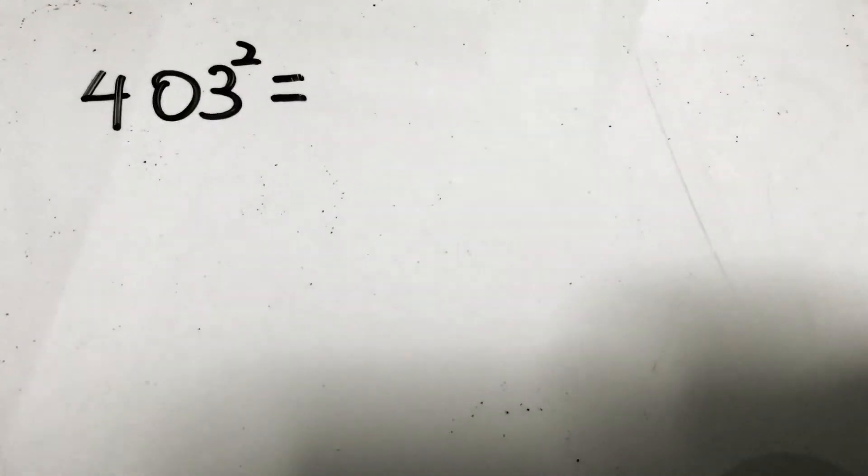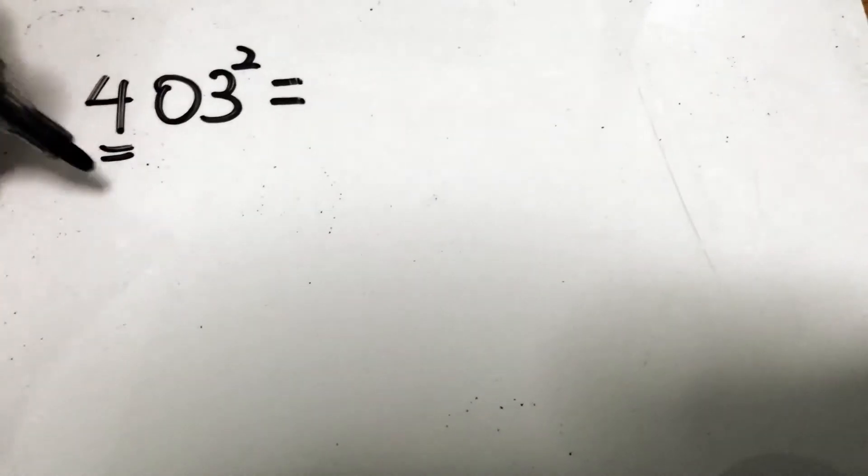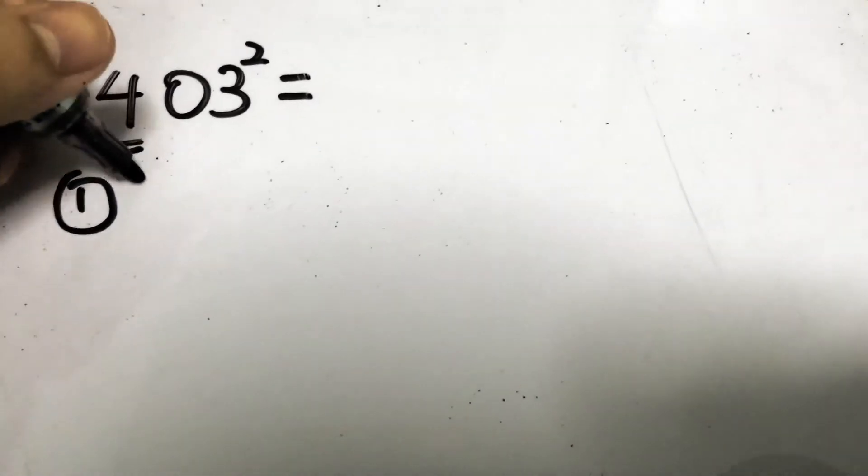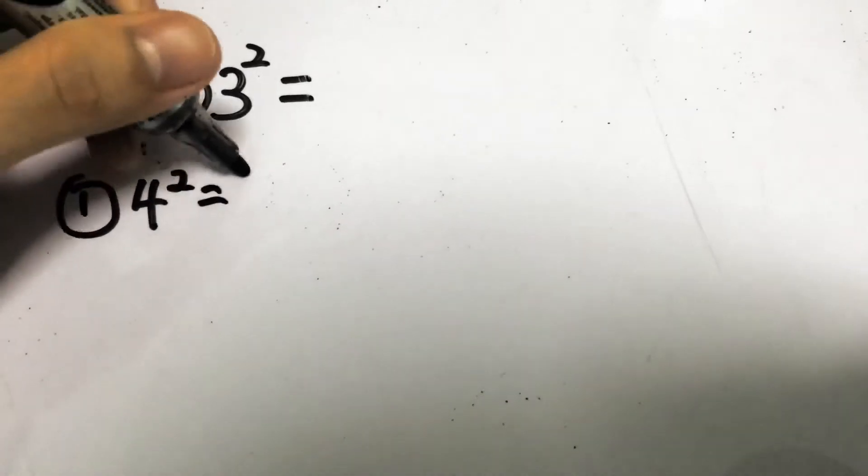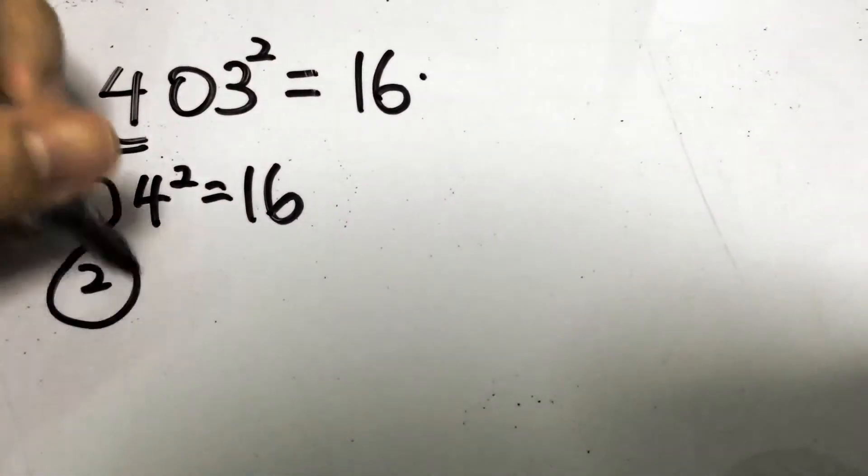Alright the next value that we will do is 403 squared. Same thing, the first thing that we will do is to take the first digit of the number itself and we square it. So here we go, 4 squared gives you 16 and here is the 16.